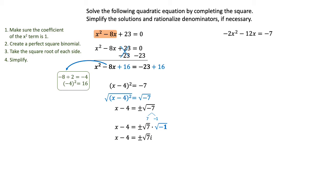We still have to isolate x, so as a final step, we're going to add 4 to both sides. That's going to give us x equals 4 plus or minus square root of 7i. You can break that into two separate answers: 4 plus square root of 7i, and 4 minus square root of 7i.